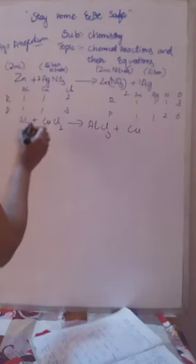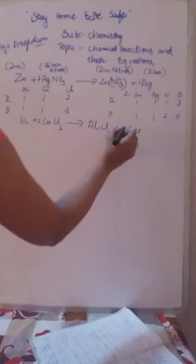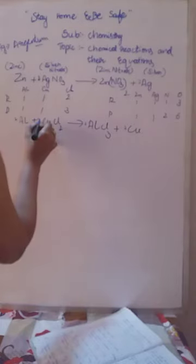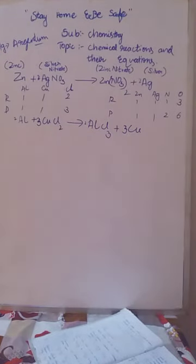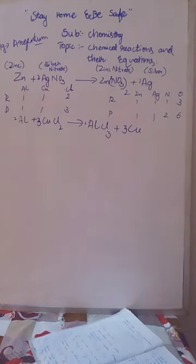Let us try putting 2 beside CuCl2: that gives 2 Cu and 2×2=4 chlorine atoms. But on the product side AlCl3 has 3 chlorine atoms — 4 ≠ 3, so not balanced. Instead, let us put 3 beside CuCl2: that gives 3 Cu and 3×2=6 chlorine atoms. On the product side, AlCl3 gives 3 chlorine — so we need 2 AlCl3 to get 2×3=6 chlorine. Now chlorine is balanced.